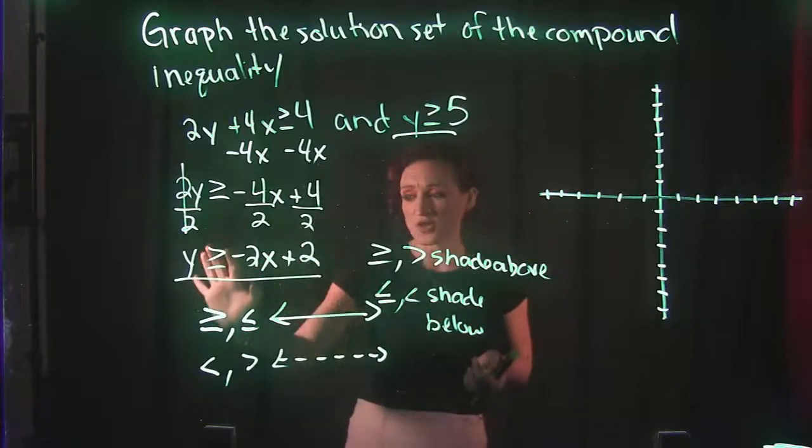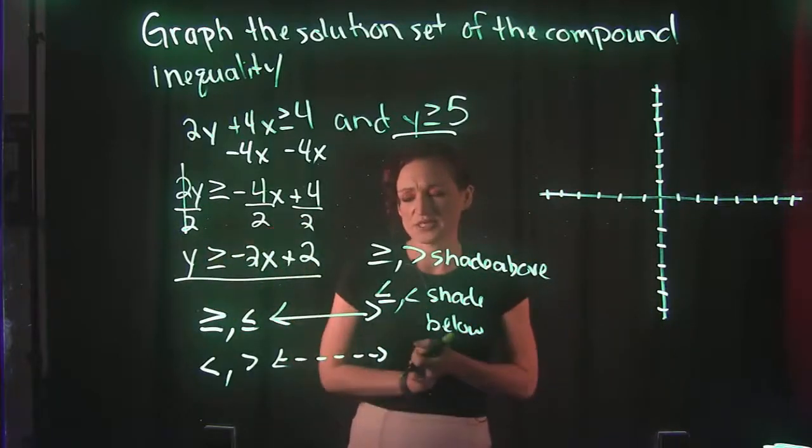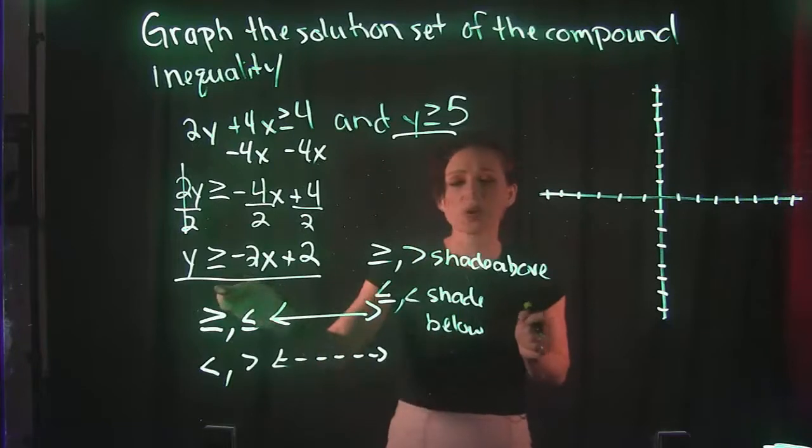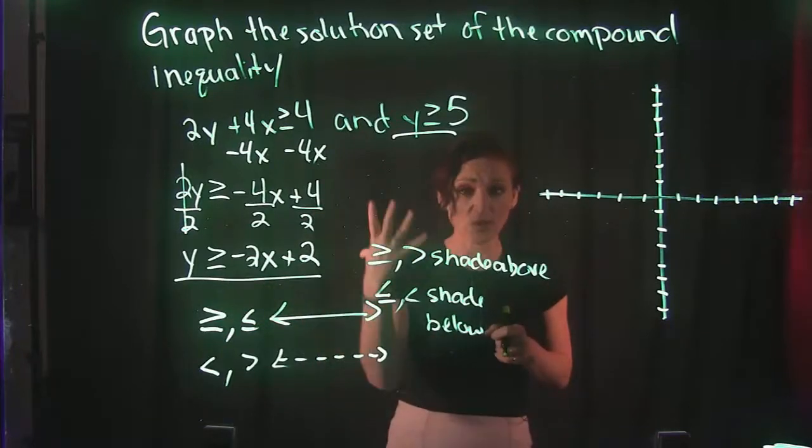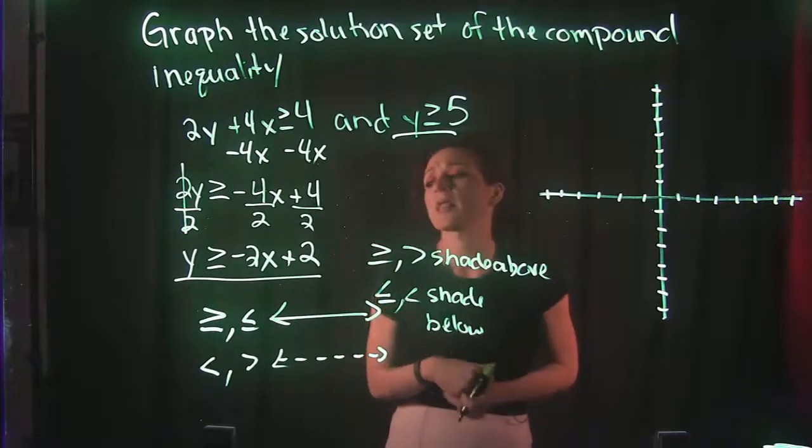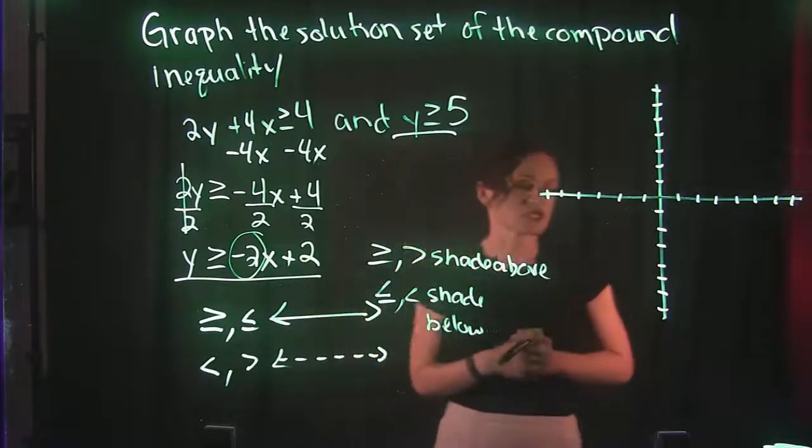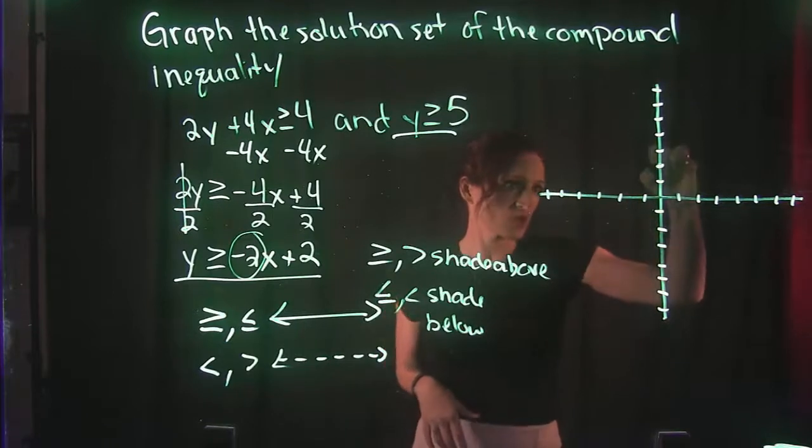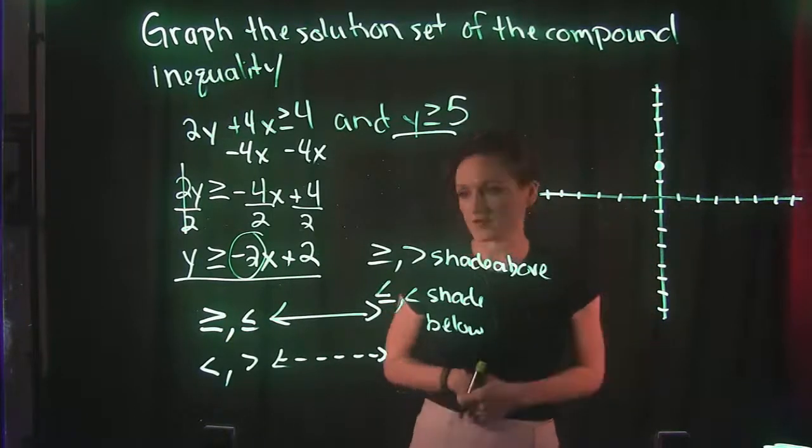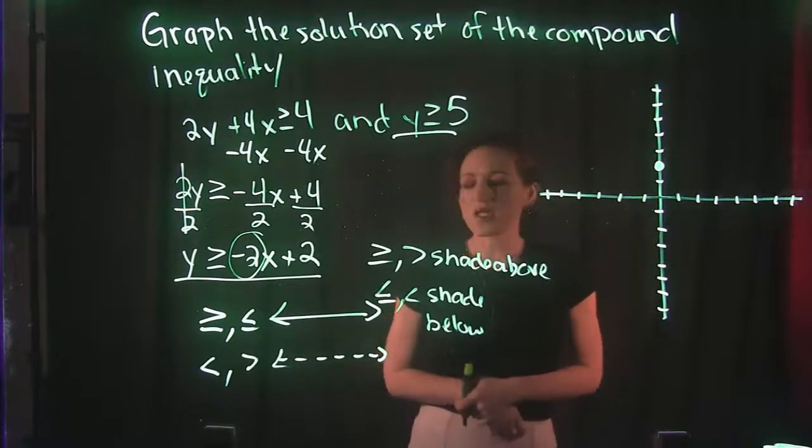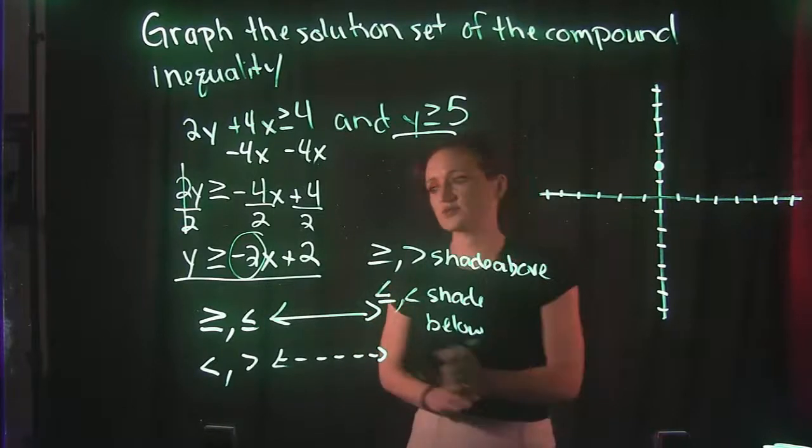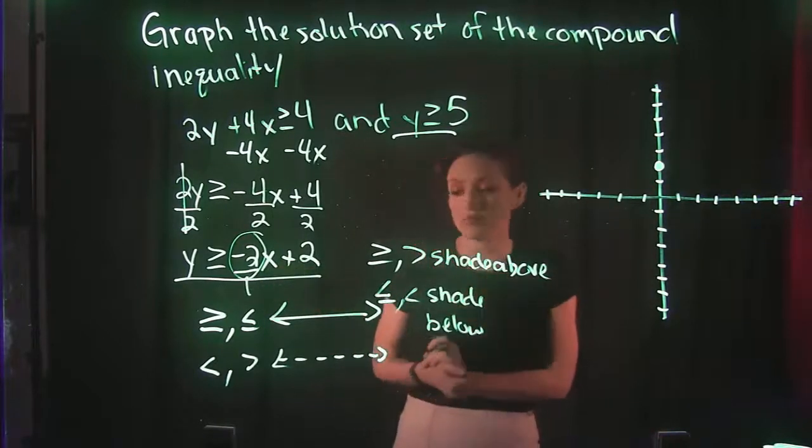Now, we have y is greater than or equal to negative 2x plus 2. So because we have the greater than or equal to symbol, that does mean we are going to have a solid line here. So we have a slope of a negative 2 and we have a y-intercept of a positive 2. So from our origin, we can go straight up 2 and plot our first point. And from there, we are doing the negative 2 slope. So that means negative 2 over 1. So up 2 over 1 in the negative direction.